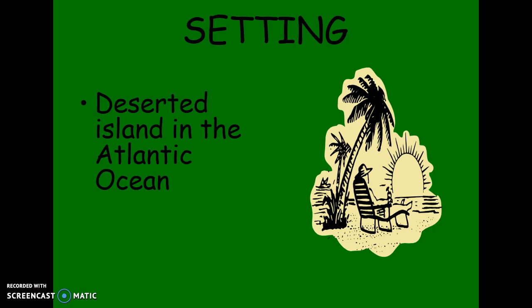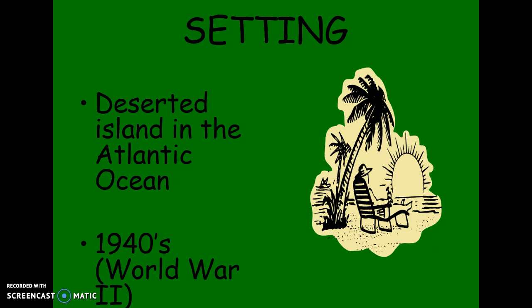So the setting of the book is a deserted island in the Atlantic Ocean, and more importantly, the time — the 1940s during World War II. The war is going to actually play a character in the book, so the boys are actually going to be fighting this war, and it's also the cause of why they're on the island. We're going to be spending a lot of time talking about what Golding's message is about war.